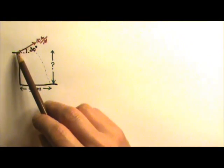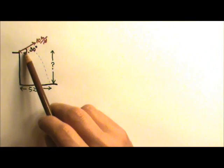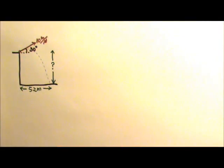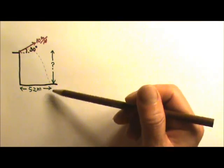A stone is thrown at 10 meters per second, 30 degrees above the horizontal, from the edge of a cliff. The stone lands 52 meters away from the base of the cliff. How high is the cliff?